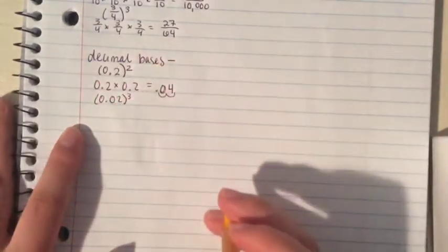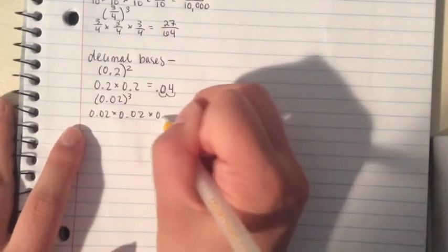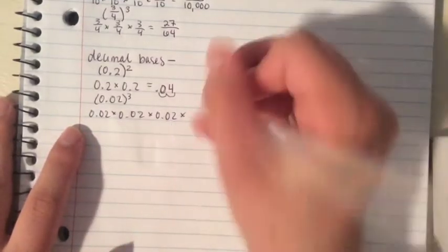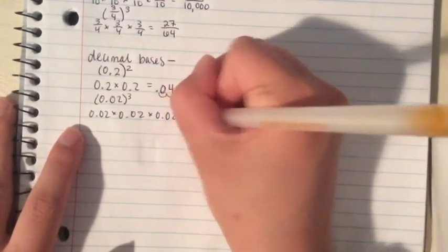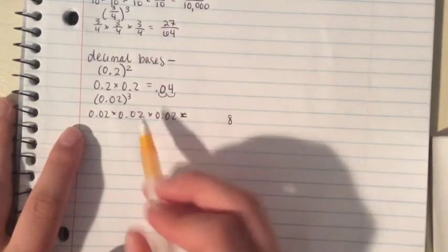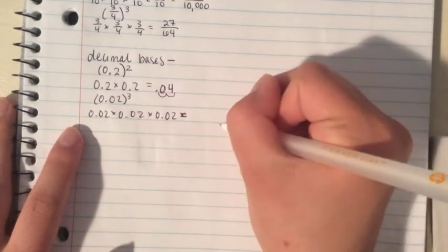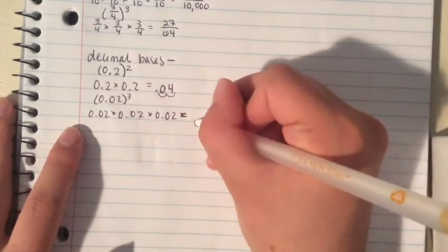.02 to the third. This is 0.02 multiplied by itself 3 times. 2 times 2 times 2 is 4, times 2 is 8, so we have to move the decimal place over 1, 2, 3, 4, 5, 6 places.